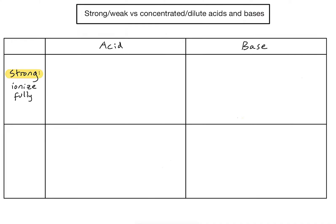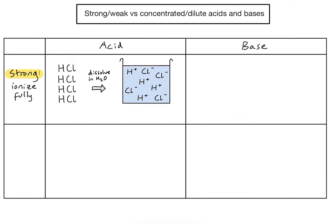Let's take hydrochloric acid as an example of a strong acid. Taking four molecules of hydrochloric acid and dissolving them in water, each of those four molecules — in fact, all four molecules — have ionised in solution to form H⁺ ions and chloride ions. Because all four of those molecules have ionised, we describe this as a strong acid.